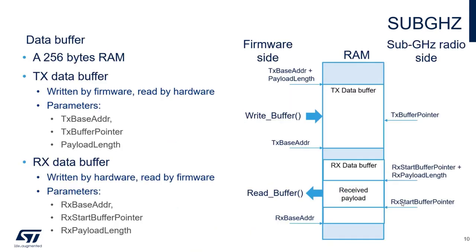The data buffer: we have 256 bytes of RAM reserved for it. There are two separated buffers — TX buffer and RX buffer — and each buffer is associated with three parameters: the base address, the buffer pointer (current pointer to the buffer), and the payload length. Fortunately, thanks to the library, there is no need to care too much about the details, since we have dedicated functions within the library to read or write to this buffer.